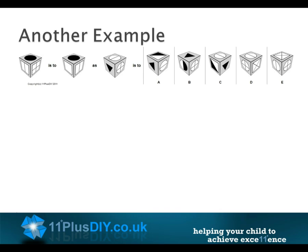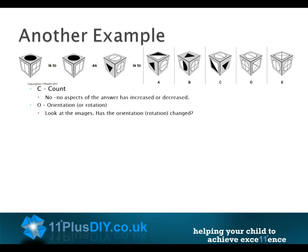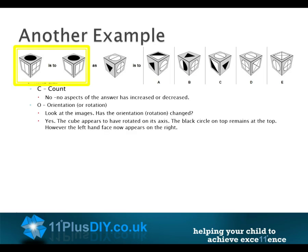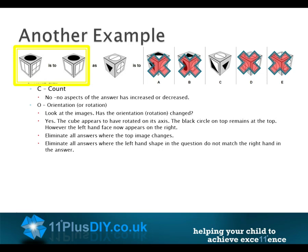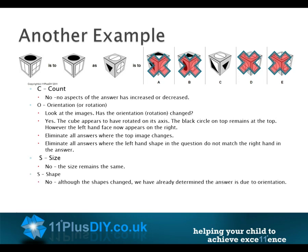Another example. Count: no aspects of the answer have increased or decreased. Orientation or rotation: yes — the cube appears to have rotated on its axis. The black circle on top remains at the top; however, the left-hand face now appears on the right. Eliminate all answers where the top image changes, and eliminate all answers where the left-hand shape does not match the right-hand in the answer. Size: no, the size remains the same. Shape: no — although the shape has changed, we have already determined the answer is due to orientation. Shade: no, no shade has changed.